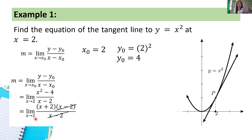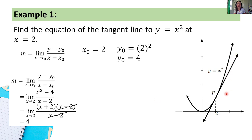Using theorem number 2, we can compute f(2) to get the limit of (x + 2) as x approaches 2. Substituting: 2 + 2 = 4. Hence, the slope of the tangent line is 4.